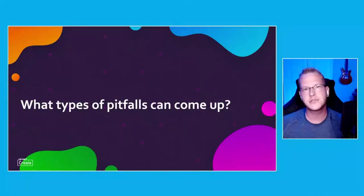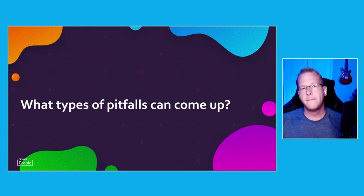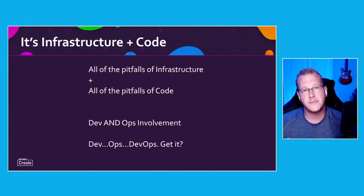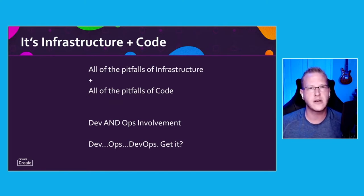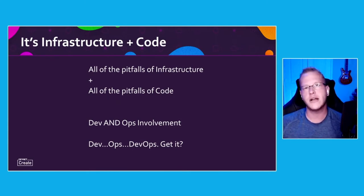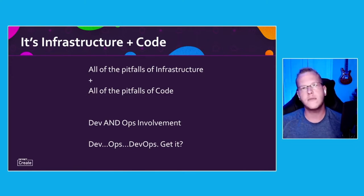So what types of pitfalls can come up when you're using infrastructure as code? I've got good news and bad news. The bad news is that there's a lot — it brings together all the pitfalls of infrastructure and all the pitfalls of code. The good news is that you probably already have a wealth of experience in either development or infrastructure. If you bring development and operations together and foster communication, you can have a more successful time moving to IaC and becoming a more DevOps-centric organization.